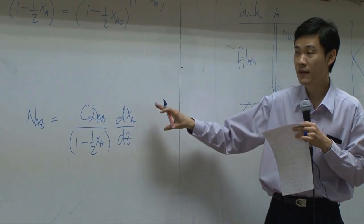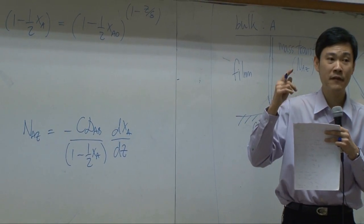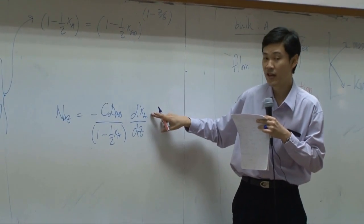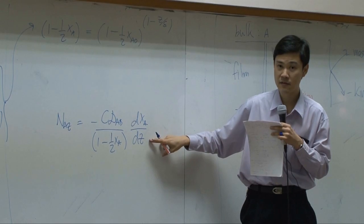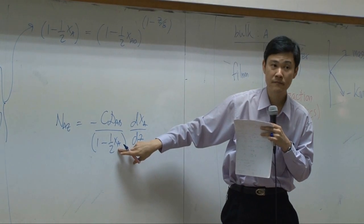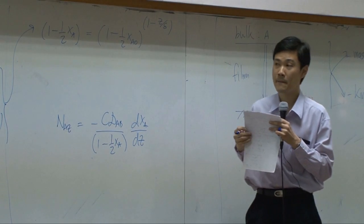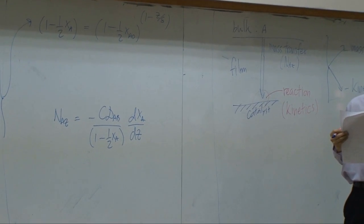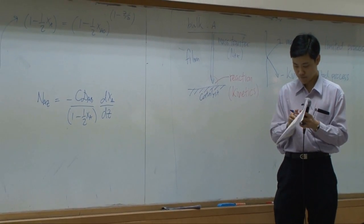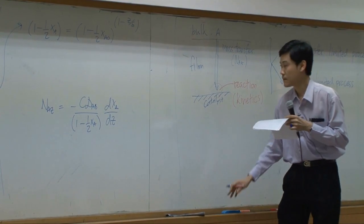How can we find NAZ? You can, first thing is, take concentration profile, differentiate it with respect to Z, and plug it back here. Also plug XA here, down there. Then you can rearrange and determine NAZ. Right? That's one way to do it.